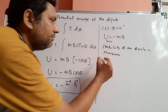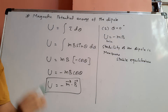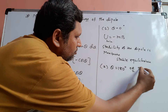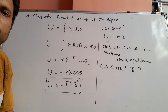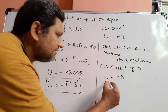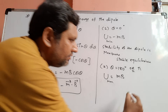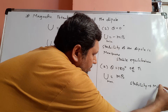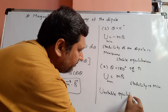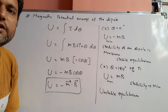This is the stable position of the dipole in a uniform magnetic field. When theta equals 180 degrees, or pi radians, cos 180 is minus 1, so U equals plus MB. This is the maximum potential energy of the dipole, which means stability is minimum. This is called unstable equilibrium — the unstable position of the magnetic dipole in a uniform magnetic field.